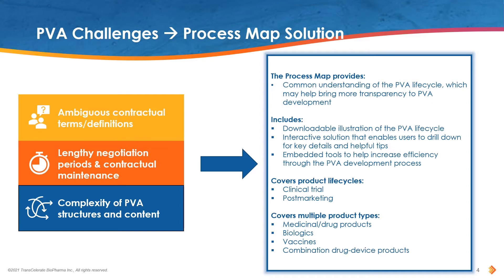Through extensive collaboration, Transcelerate developed a process map that provides users with an illustration of the PVA life cycle and may help to bring more transparency and understanding of the PVA process, including for those that are either new to pharmacovigilance or in other business functions. In addition to offering a downloadable illustration for reference, the interactive process map website contains key details and helpful tips for each phase and step of the process, plus additional tools to help improve efficiency.